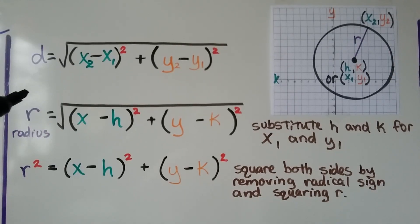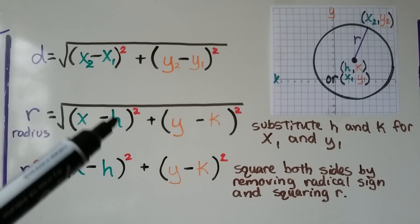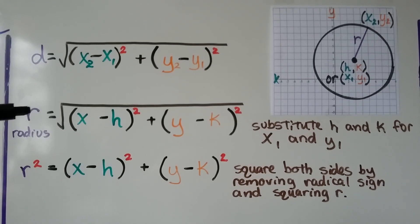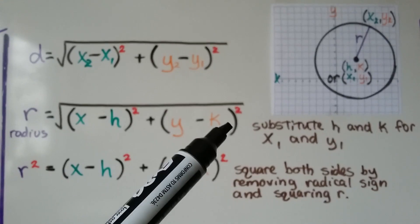You should be familiar with the distance formula by now at this point in math. And what we can do is put the r for radius in the place of d for distance, and we can put the h for our x sub 1 and the k for our y sub 1, and we get the radius is equal to the square root of x minus h squared plus y minus k squared.